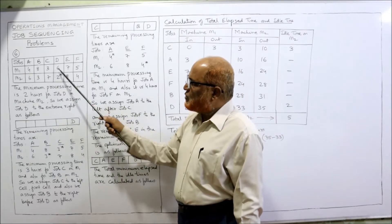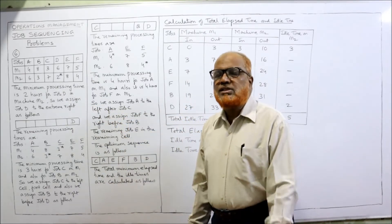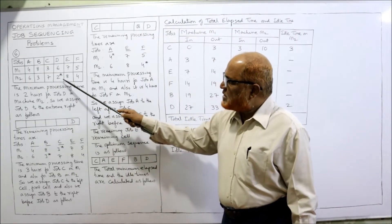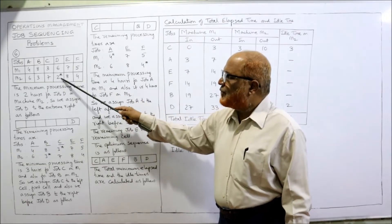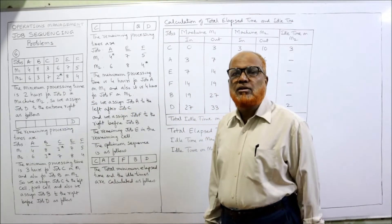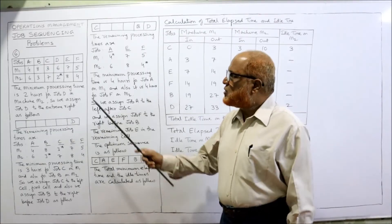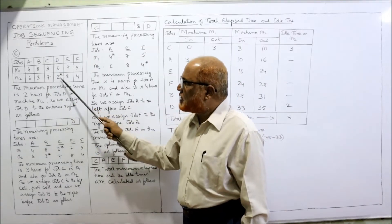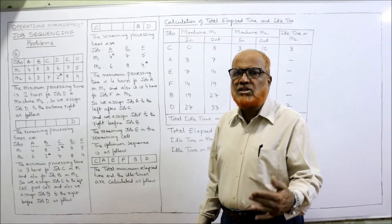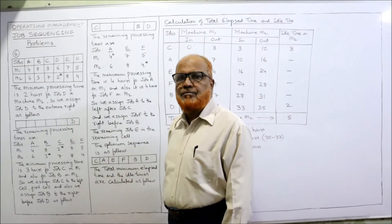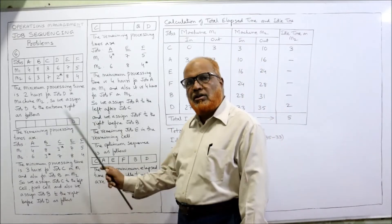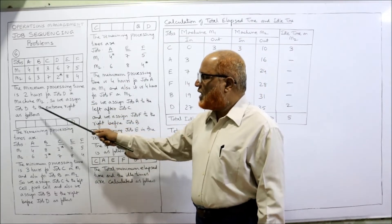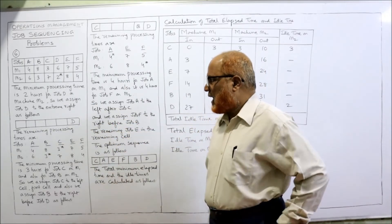We follow exactly the same procedure as in previous problems. With jobs A, B, C, D, E, F and their processing times, the first thing is to select the minimum processing time among all of them. The minimum processing time is 2 hours — for job D on machine M2, the second machine. So we have to assign from the right. If it had been on the first machine we would assign on the left side. Since it is on M2 (right side), we assign job D to the extreme right.